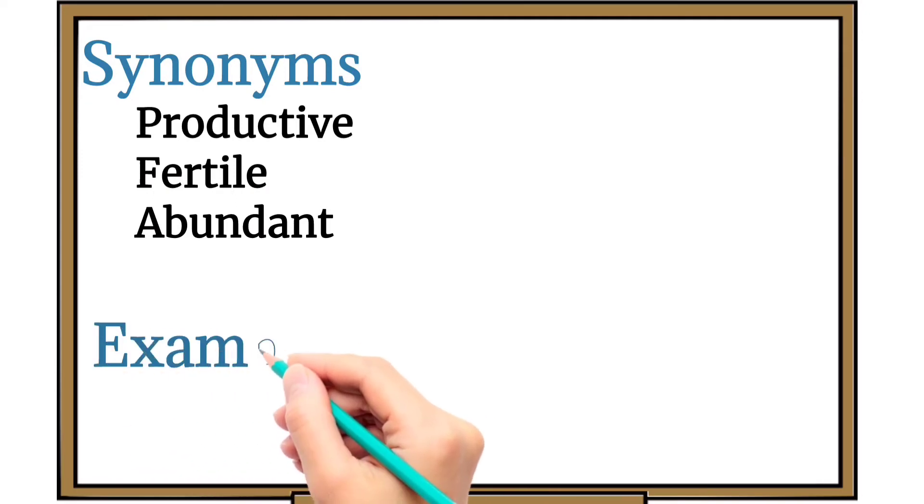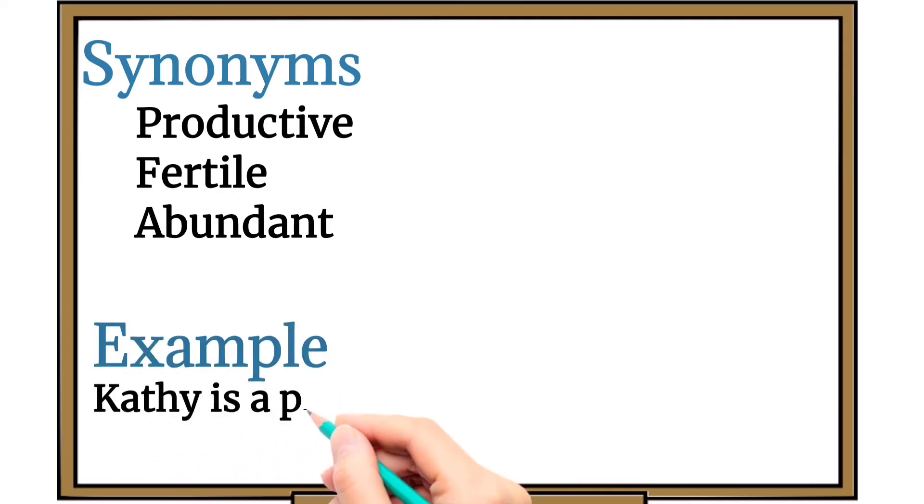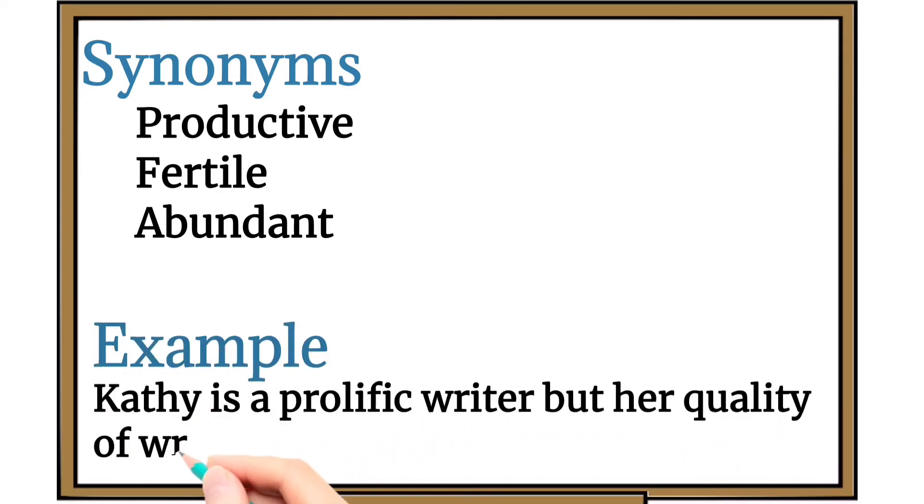The example of the word in sentence is: Kathy is a prolific writer but quality of her writing is questionable.